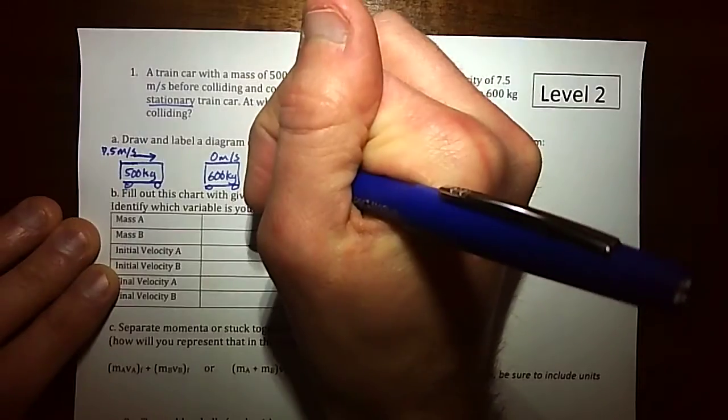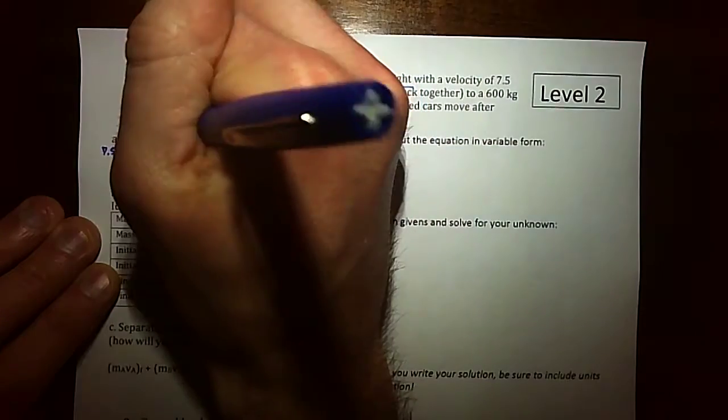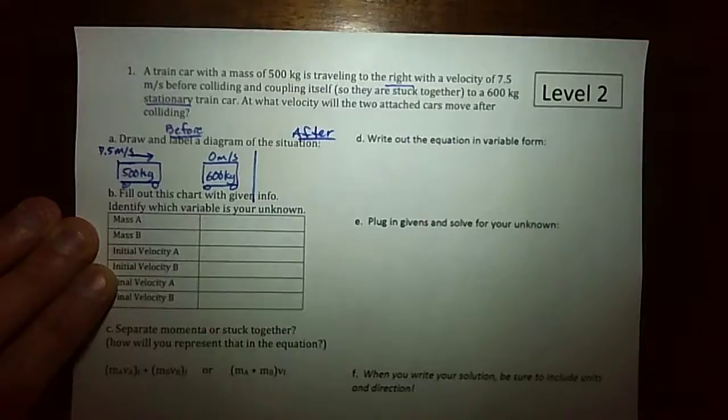Alright, so that's kind of the before situation and then we know they're going to collide, right? So afterwards, I could label here before even if it's up top I know there's not a lot of room and then right here after, right?